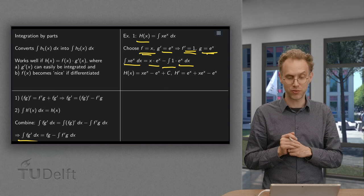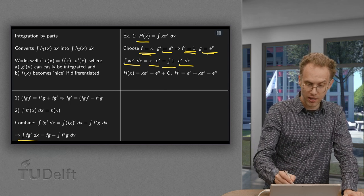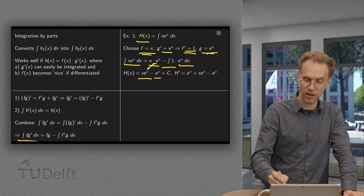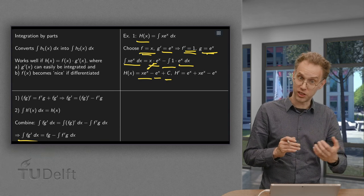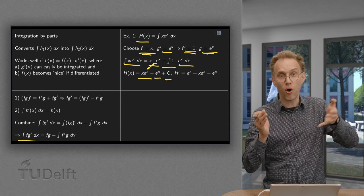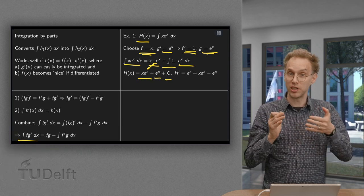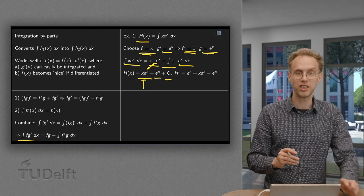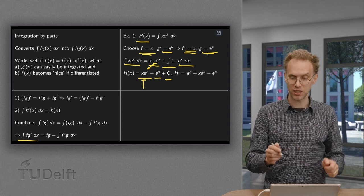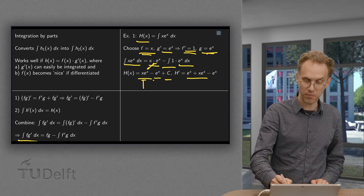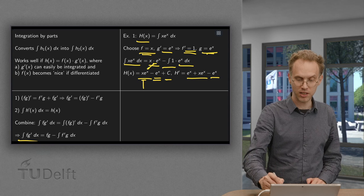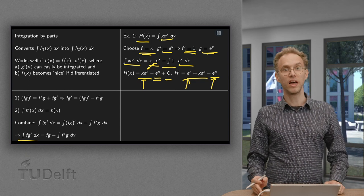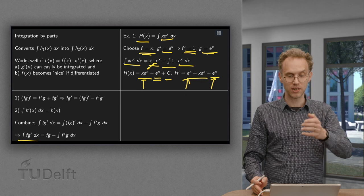Now we have a new integral which is just e to the power x, and that is easier than our first one. The result is x times e to the power x minus e to the power x plus a constant of integration. We verify by computing the derivative of the antiderivative H(x): differentiating x times e to the power x gives e to the power x plus x times e to the power x, and differentiating minus e to the power x gives minus e to the power x. These two cancel, leaving x times e to the power x, which is our original function. So we have successfully computed the antiderivative of x times e to the power x.